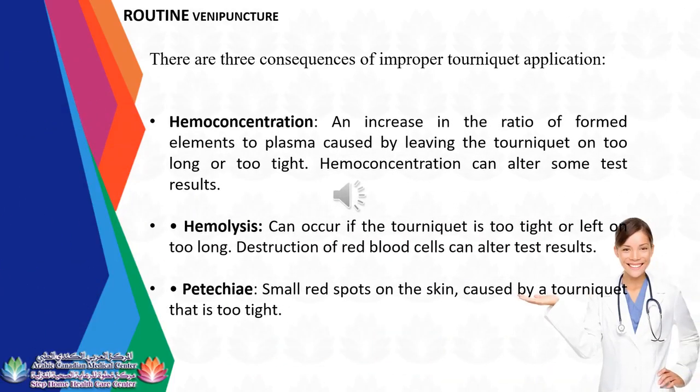There are three consequences of improper tourniquet application: Hemoconcentration — an increase in the ratio of formed elements to plasma caused by leaving the tourniquet on too long or too tight, which can alter some test results. Hemolysis — can occur if the tourniquet is too tight or left on too long; destruction of red blood cells can alter test results. Petechiae — small red spots on the skin caused by a tourniquet that is too tight.